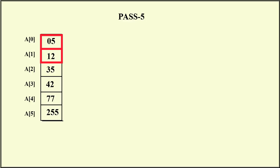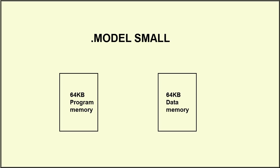For n elements we require n minus 1 passes, and in each pass we reduce one comparison because one element gets sorted per pass. Now I am going to implement this algorithm in 8086 assembly. We use dot model small and dot stack to allocate stack memory for temporary information.